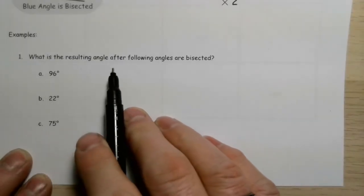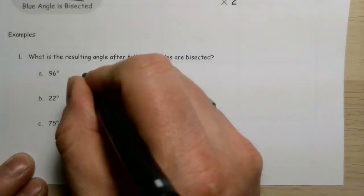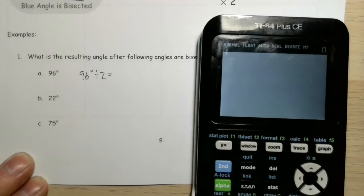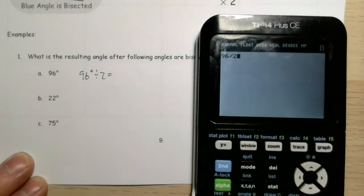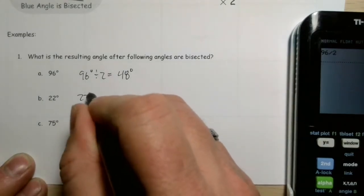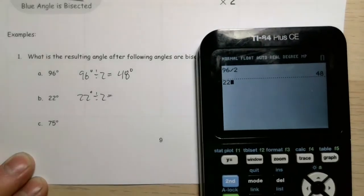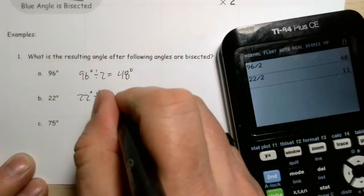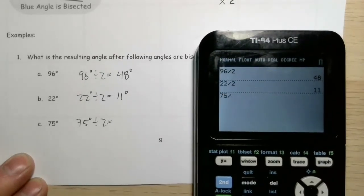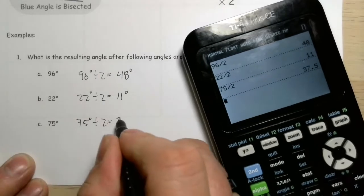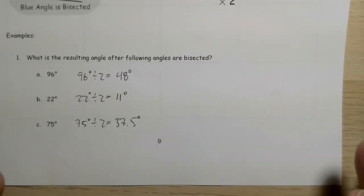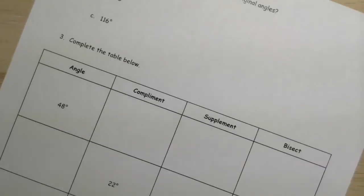What is the resulting angle after the following angles are bisected? If we're bisecting an angle, we divide by two. 96 degrees divided by two gives us 48 degrees — that's the bisect angle. 22 degrees divided by two gives us 11 degrees. 75 degrees divided by two gives us 37.5 degrees. It doesn't matter that it ended up with a decimal — I can still cut it in half. Not a big problem.